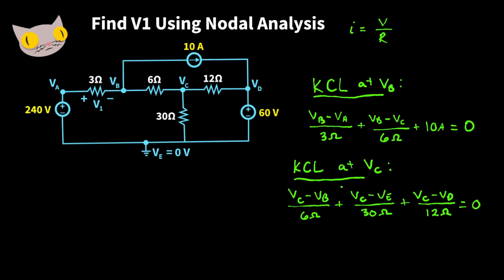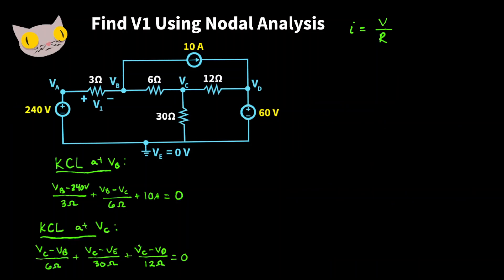Next, let's substitute in our known values. VA is 240 volts. Let's simplify these two equations and substitute in our known values. I'll put them down here.